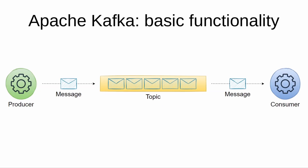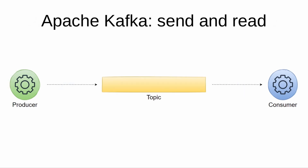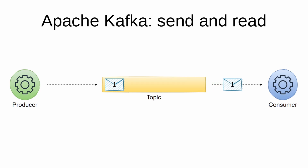Kafka also supports this function using slightly different terminology and implementation. To send a message, a producer adds a message to a topic. After that, the message is stored in the topic and can be read and processed by a consumer. Note however that unlike message queues, Kafka does not immediately remove a processed message from a topic.